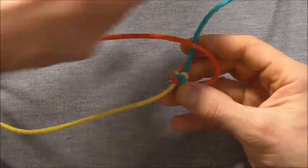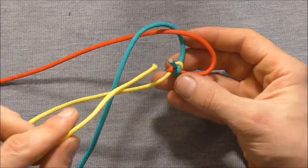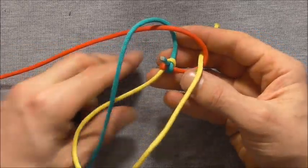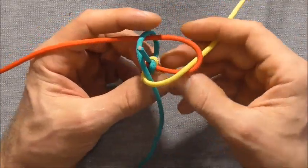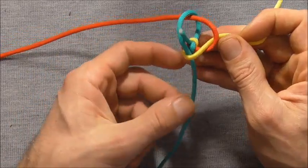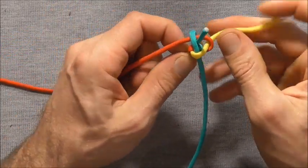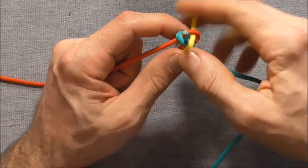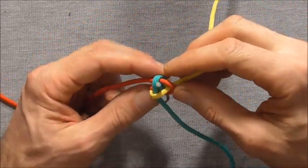I will take the blue strand over the yellow and the yellow down through that red loop. Now we can tighten this whole thing up. And again make sure that the tag end here ends up in the center of the triangle.